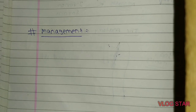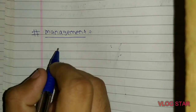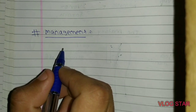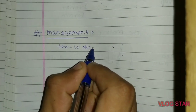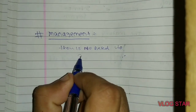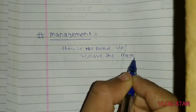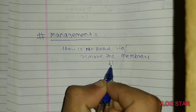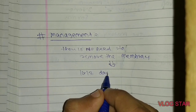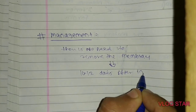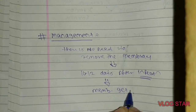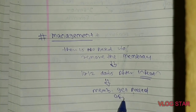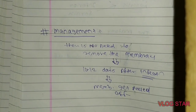Regarding management of pseudomembranous conjunctivitis: as with acute catarrhal conjunctivitis, there is no need to remove the membrane, because in 10 to 12 days after infection the pseudomembrane will peel off on its own. This concludes the topic of pseudomembranous conjunctivitis.